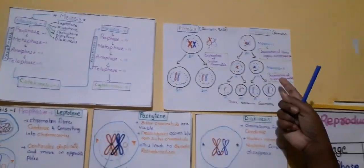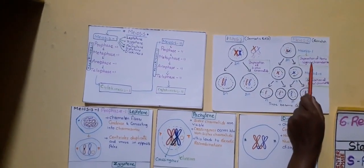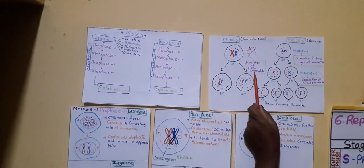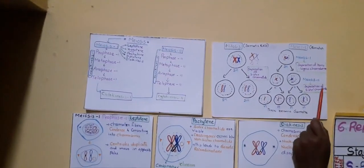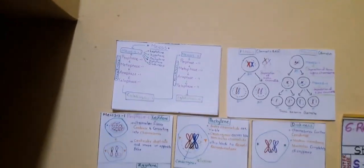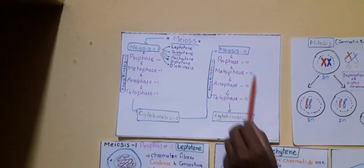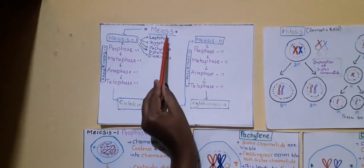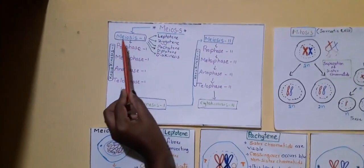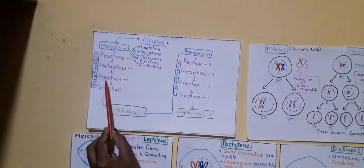What are the major stages involved in the meiosis process? Children, this is a very important table — note it down so you can easily understand. Meiosis is of two types: Meiosis 1 and Meiosis 2. In Meiosis 1, it is classified into phases: Prophase 1, Metaphase 1, Anaphase 1, and Telophase 1. When a cell gets divided, first we can see the division of nucleus. The division of nucleus is called karyokinesis.